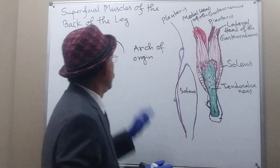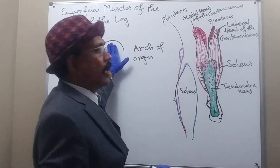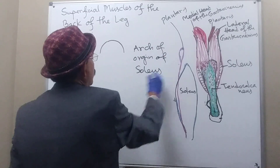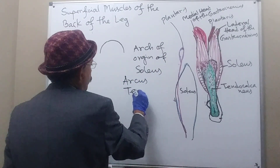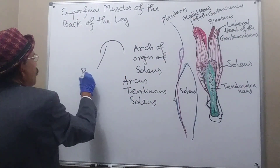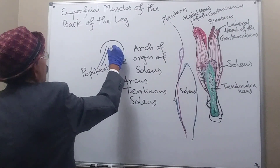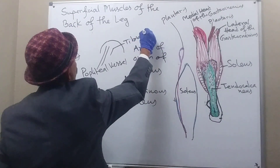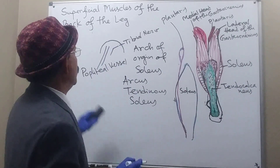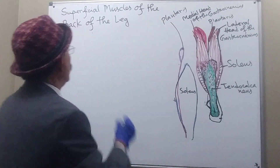Underneath the arcus tendineus soleus, we have the popliteal artery, the popliteal vein, and the tibial nerve — these structures pass under the arch of origin of the soleus.